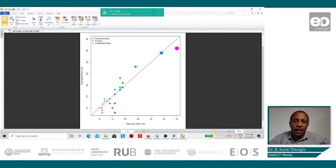Finally, the area indicated in green is what was underestimated. This means that the area reported by the farmers was lower than the area estimated from the satellite images.